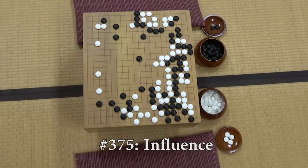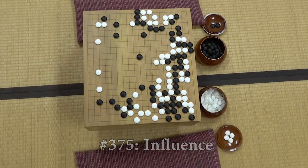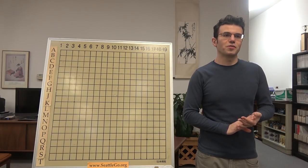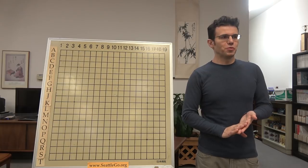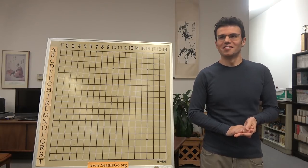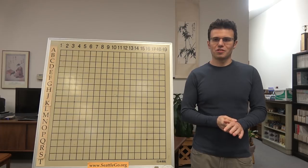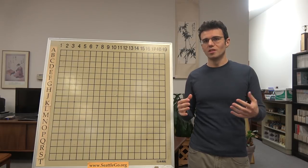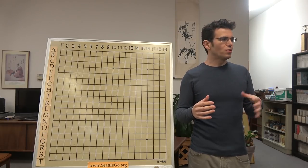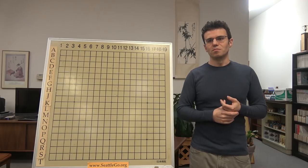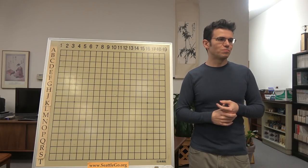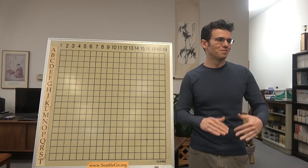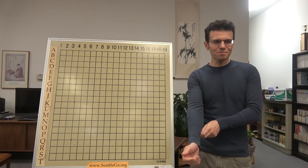Alright, we're going to get started. Tonight's very exciting topic is going to get a little spiritual, because today we're going to talk about influence. For the purposes of this lecture, I'm really going to try to gear it more towards players around 15 kyu, maybe 15 to 20 kyu, but I am very liable to go off on more advanced tangents.